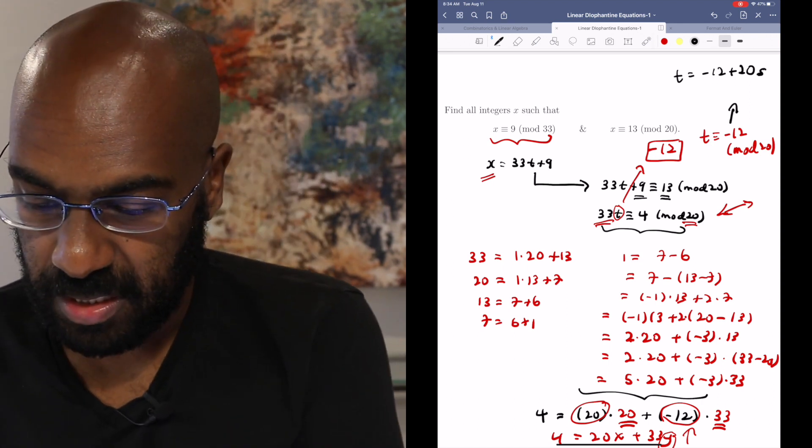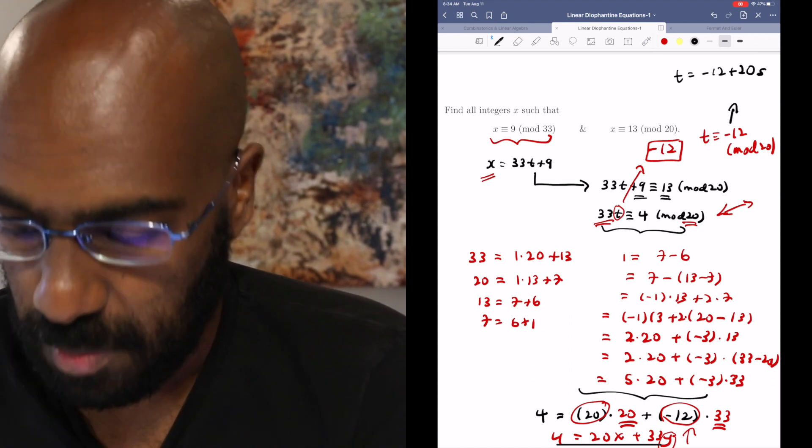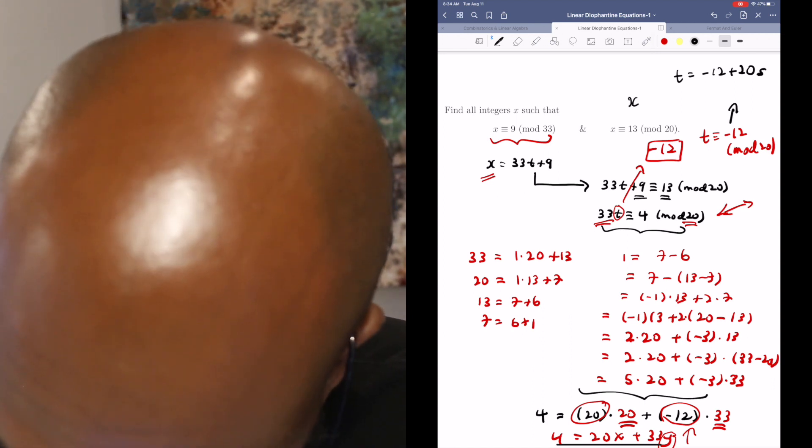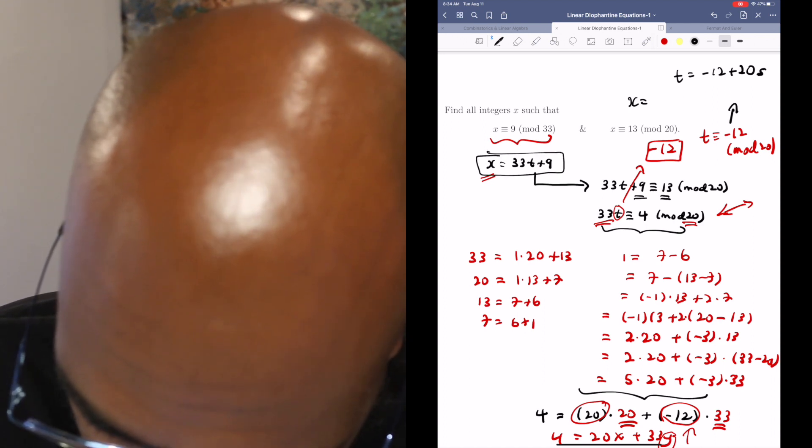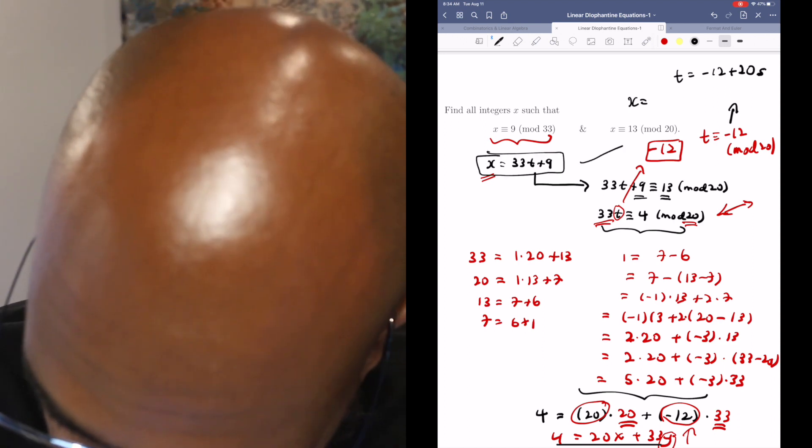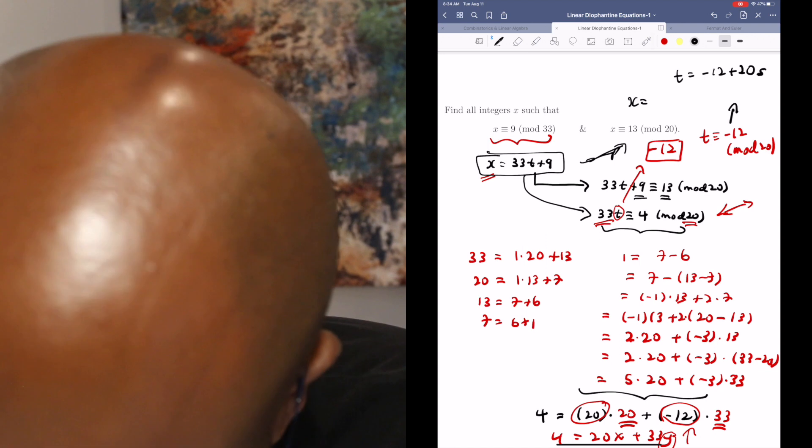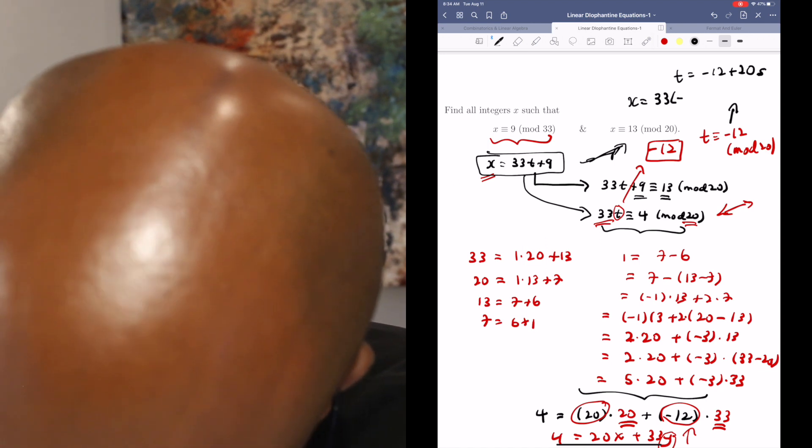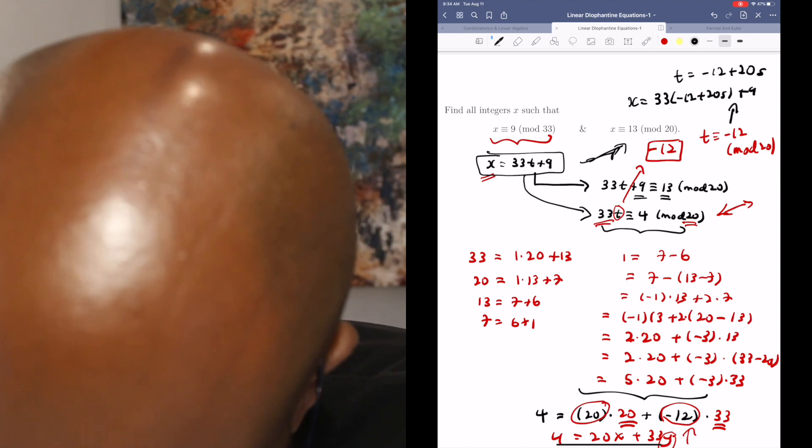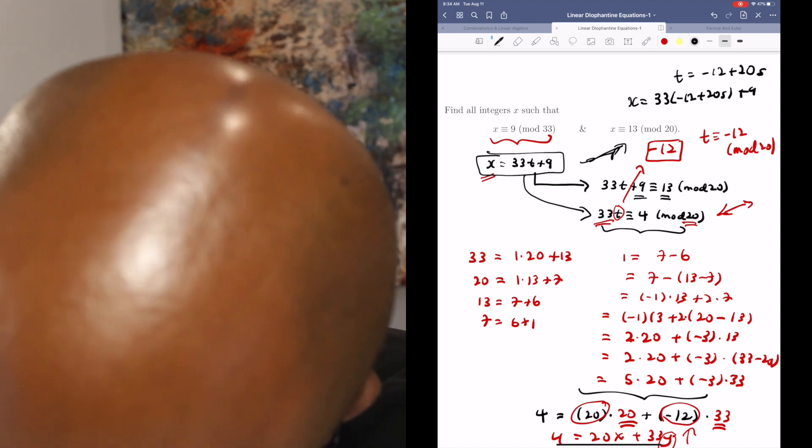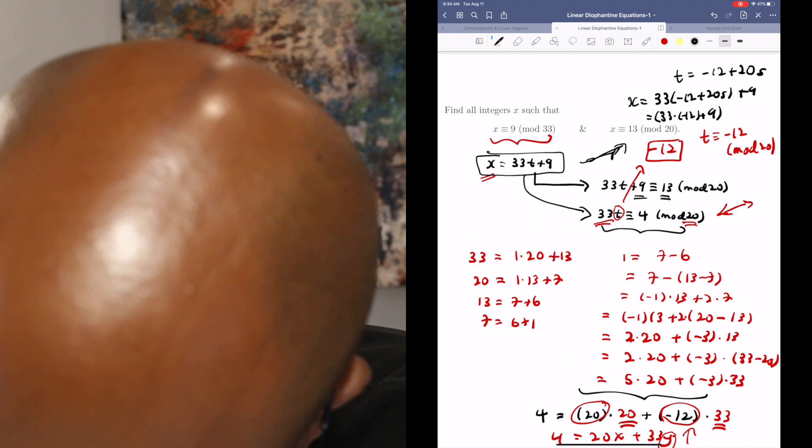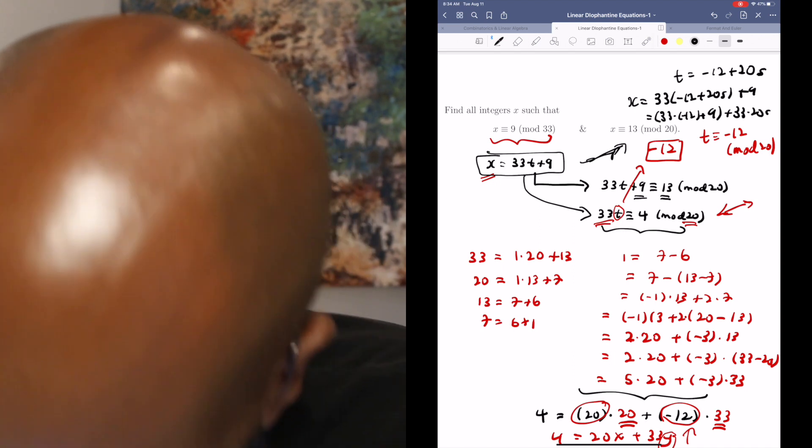So t then is going to look like negative 12 plus 20 times something else. Let's call it s. And the entire set of values of t that work are things that look like this, where s is any possible integer. So because the things that x look like are of this form, where t is any integer that satisfies this particular equation here, x is going to look like things like 33 times negative 12 plus 20s plus 9.